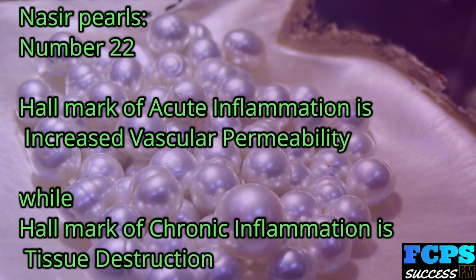Nasir Pearl number 22: The hallmark of acute inflammation is increased vascular permeability, while the hallmark of chronic inflammation is tissue destruction.